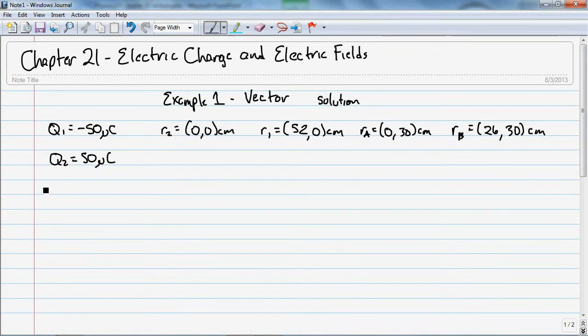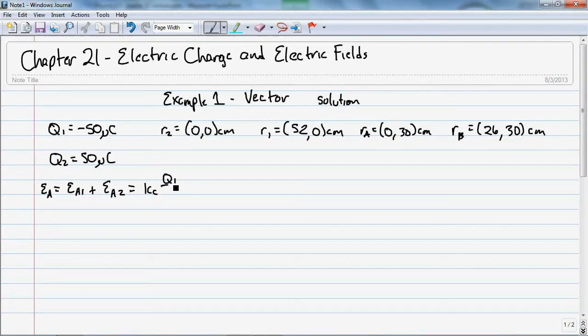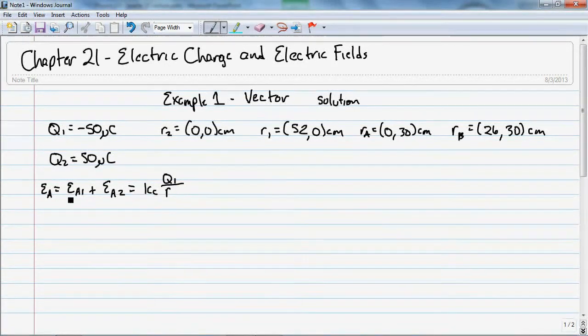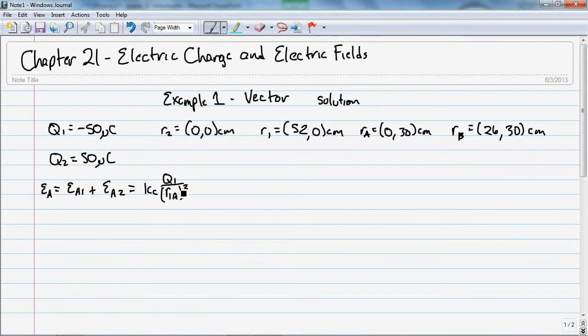Well, let's put the formula down. So for point A, it's going to be the electric field at A due to 1 plus the electric field at A due to 2. And that's just going to be KC times Q1 over R1A squared times R-hat 1A plus KC Q2 over R2A squared.